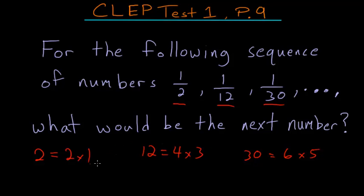So following the same pattern we can deduce that the next term would have 8 times 7, which is 56 as its denominator. So the final answer for this question is that the next number in this sequence would just be 1 56th.